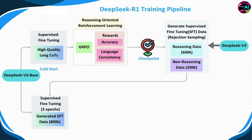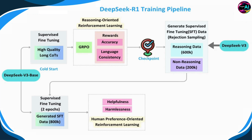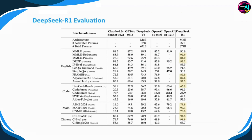These samples are then used to perform supervised fine-tuning on the DeepSeek V3 base model for two epochs. After fine-tuning, a second reinforcement learning phase focuses on human preference. Rewards are given based on helpfulness — ensuring the final summary is relevant and useful — and harmlessness, evaluating the entire response to reduce risk, bias, or harmful content. Once the RL model converges, we finally get DeepSeek R1. Here's an evaluation of the R1 model.